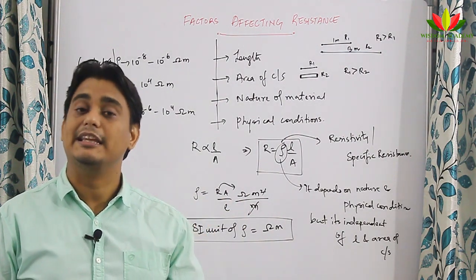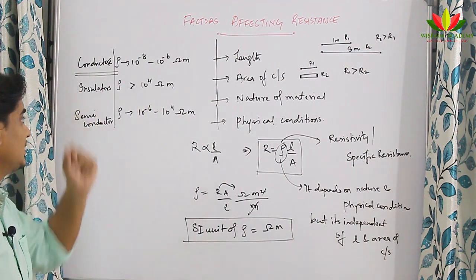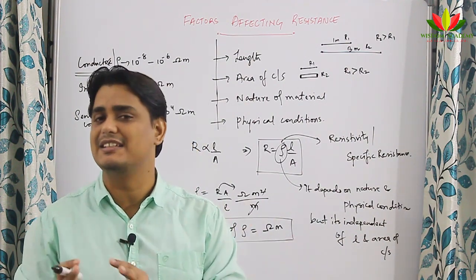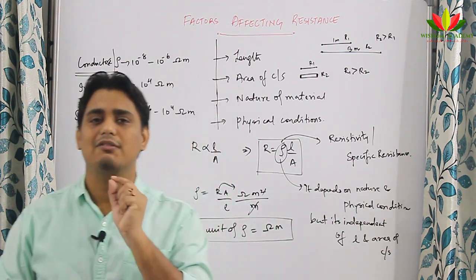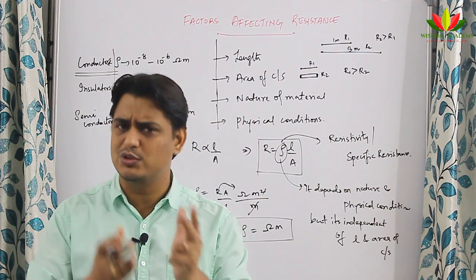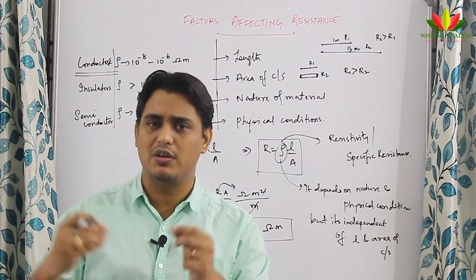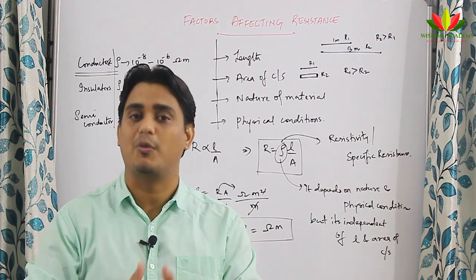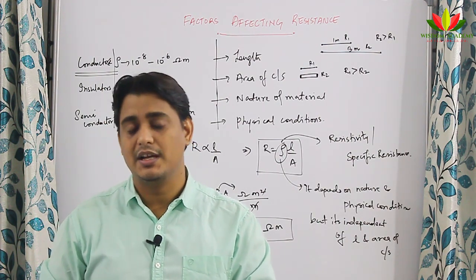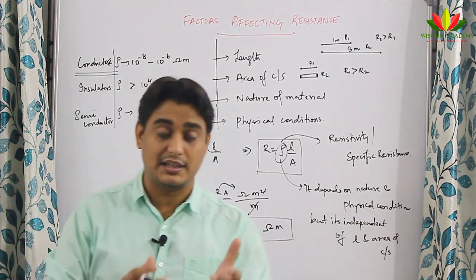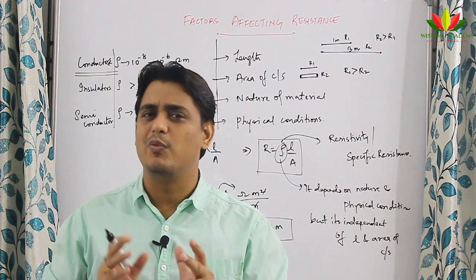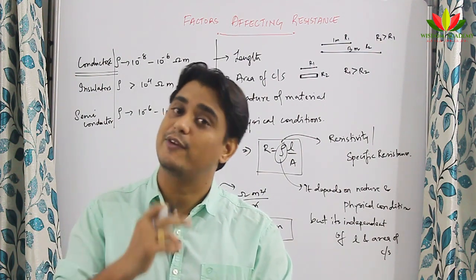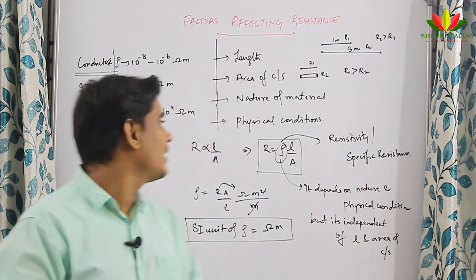Conductors are materials which allow the flow of charge, and since charge is allowed to move inside them, they conduct heat and electricity. Different materials have different resistivities — how much they can conduct depends on their resistivity. For example, copper has very low resistivity, so it allows current to move very fast, which is why we use copper wires in domestic circuits. Nichrome, on the other hand, is a conductor with very high resistivity, so nichrome is used in places where we want the heating effect of electric current.